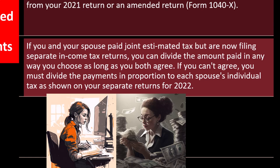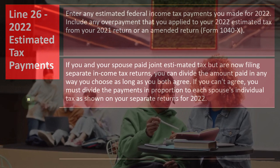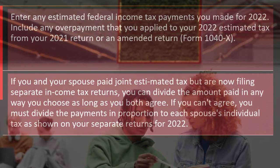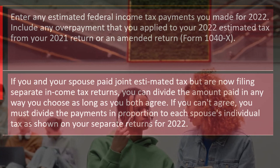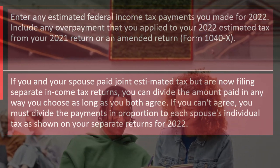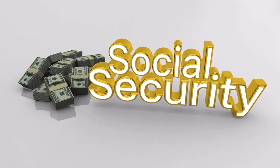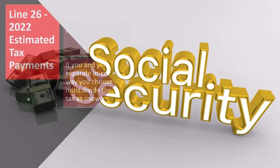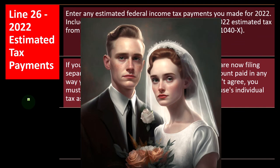If you and your spouse paid joint estimated tax but are not filing separate income tax returns, you can divide the amount paid in any way you choose, as long as you both agree. On a joint return you are essentially paying as one. Note that this gets a bit messy with something like Social Security, which must be applied to the correct spouse to ensure benefits are being paid to the proper Social Security number. People who are single and then get married are generally treated as one entity for taxes, but there are exceptions such as Social Security payments.